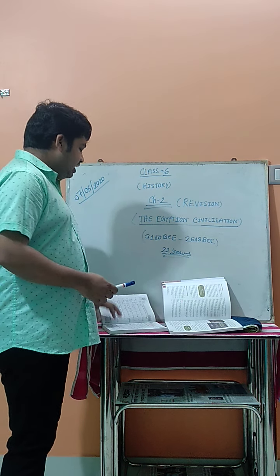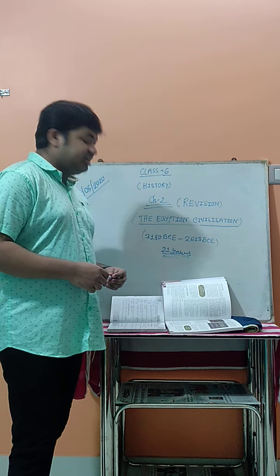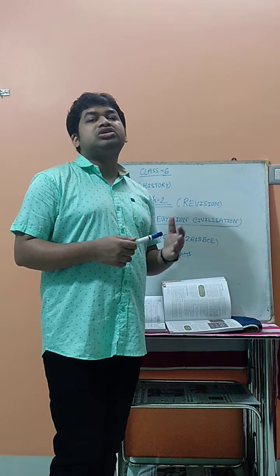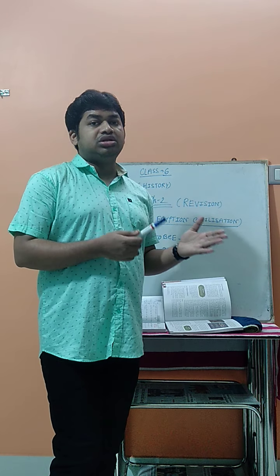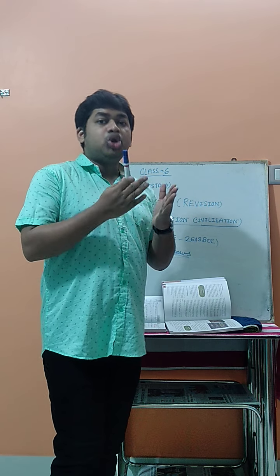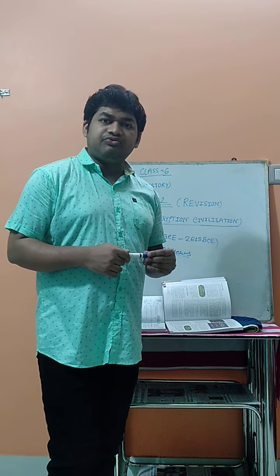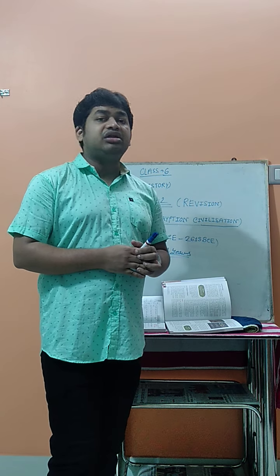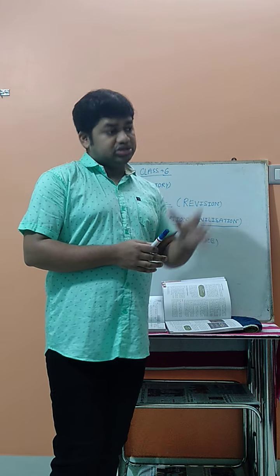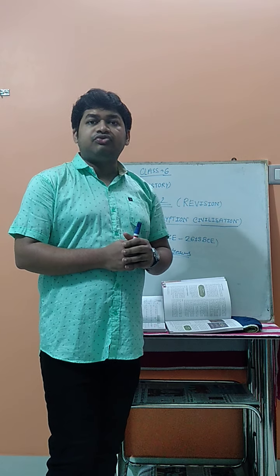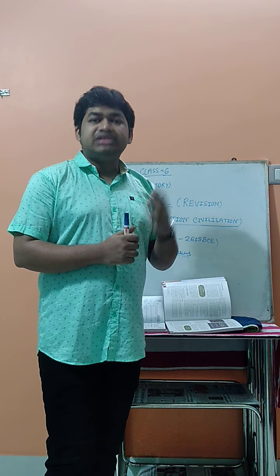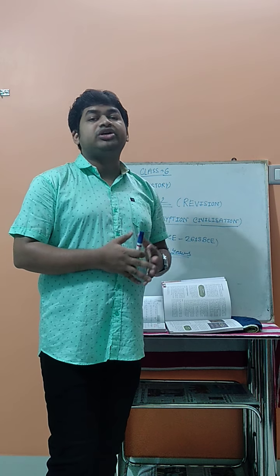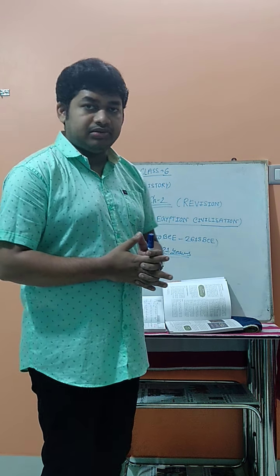The next question is: why was agriculture the chief occupation in Egypt? Agriculture was the main occupation because the Egyptian civilization was located beside the river Nile, making the land very fertile. This fertile land was ideal for agriculture, which is why agriculture was the main occupation of the Egyptian people.